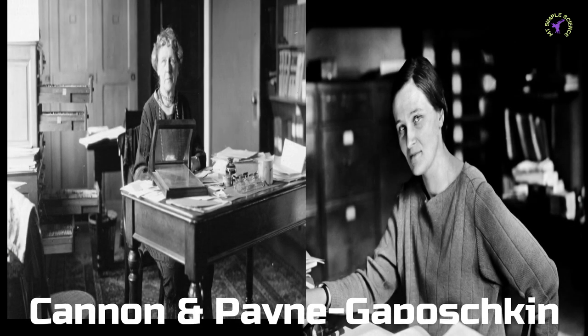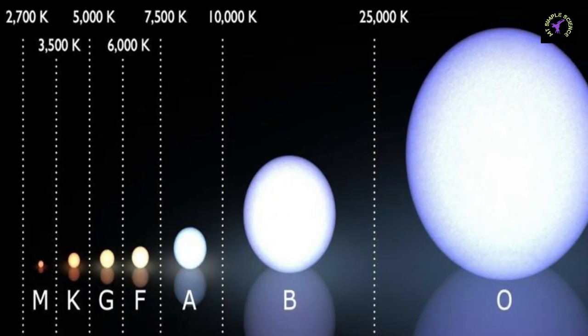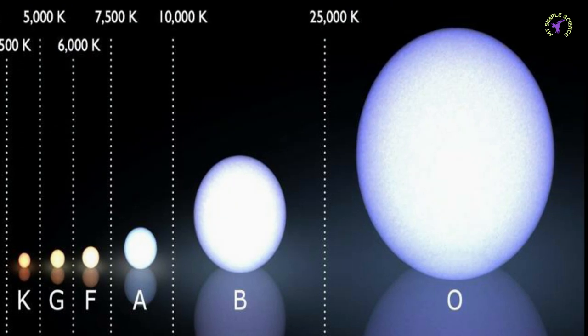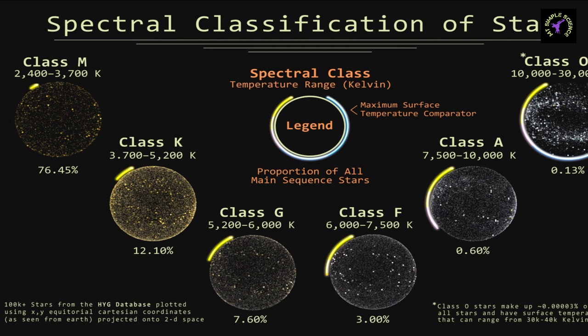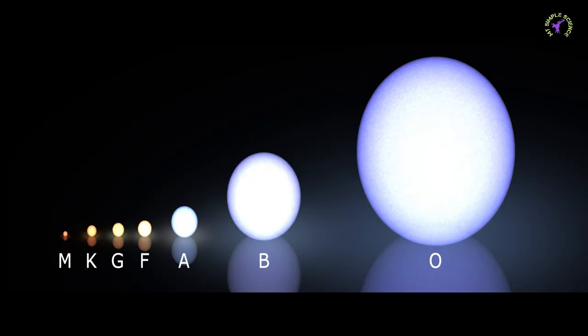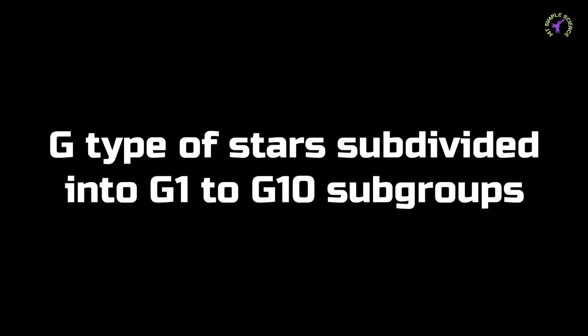The star classification system given by Cannon and Payne-Gaposchkin is still used today. According to temperature, stars are classified assigning letters from O to Y. Hottest stars are of type O, slightly cooler stars are of type B, and followed by A, F, G, K, and M. Each group divides into 10 subgroups, like G group is divided into subgroups G1, G2, up to G10.